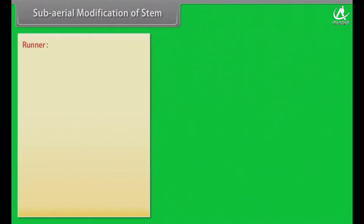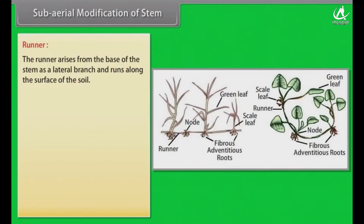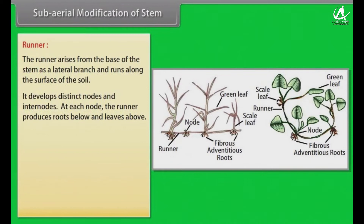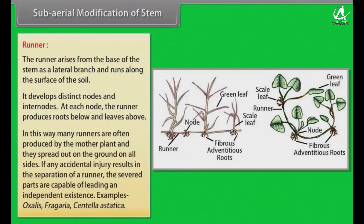The runner rises from the base of the stem as a lateral branch and runs along the surface of the soil. It develops distinct nodes and internodes. At each node, the runner produces roots below and leaves above. Many runners are often produced by the mother plant and they spread out on the ground on all sides. If any accidental injury results in the separation of a runner, the severed parts are capable of leading an independent existence.